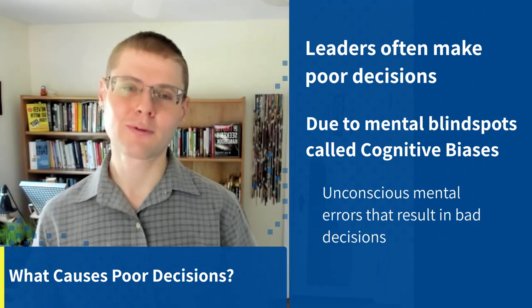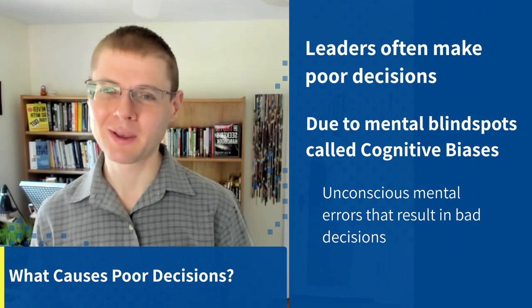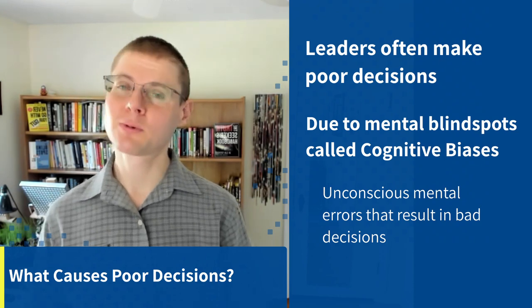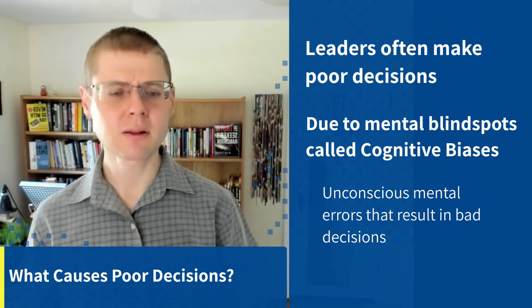These cognitive biases — there are over 100 of them — are not conscious. We're not aware that we're making them, otherwise we wouldn't be making them. They cause a lot of errors; these are mental blind spots that result in bad decisions. With the empathy gap, that results specifically in bad decisions because of us not noticing the emotions involved in decision-making — our emotions and our employees' emotions.